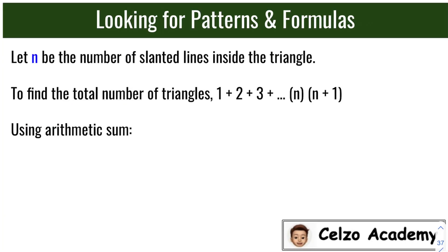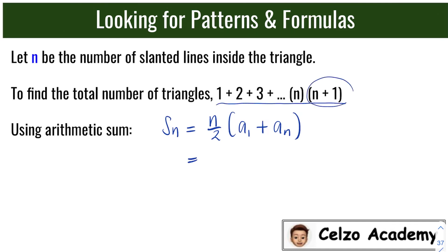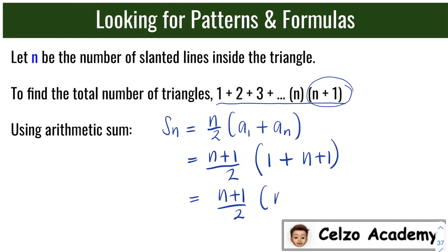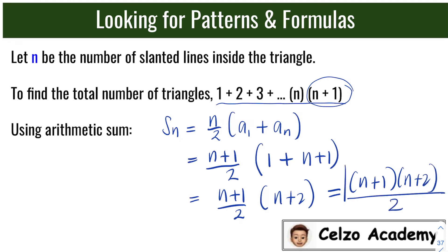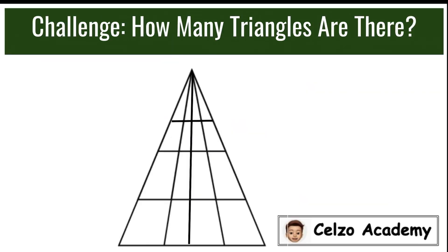Let n be the number of slanted lines inside the triangle. To find the total number of triangles we need to add 1 + 2 + 3 + ... + (n + 1). The formula for an arithmetic sum is S = (number of terms / 2) × (first term + last term). For the sequence from 1 to (n + 1), there are (n + 1) terms, the first term is 1, and the last term is (n + 1). So S = (n + 1) / 2 × (1 + (n + 1)) = (n + 1)(n + 2) / 2, which is the formula we use.